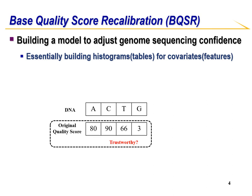To build the recalibration model, BQSR goes through all the bases and all the reads and tracks data about the following covariates: what read group the read belongs to, also known as the read group covariate; what quality score was reported by the machine, also known as the quality covariate; what machine cycle produced this base, also known as the cycle covariate; and what is the current base and the previous bases, also known as the context covariate. Essentially, we are building histograms for these covariates.